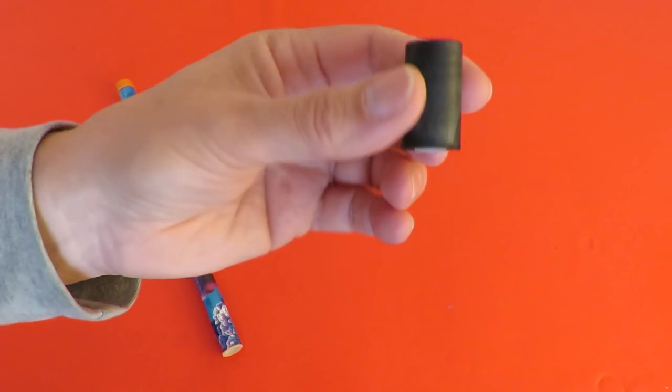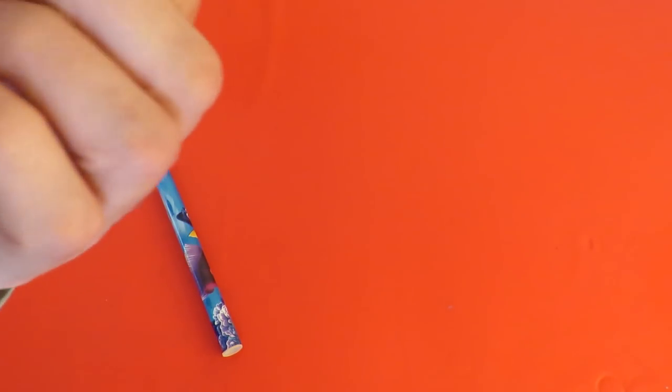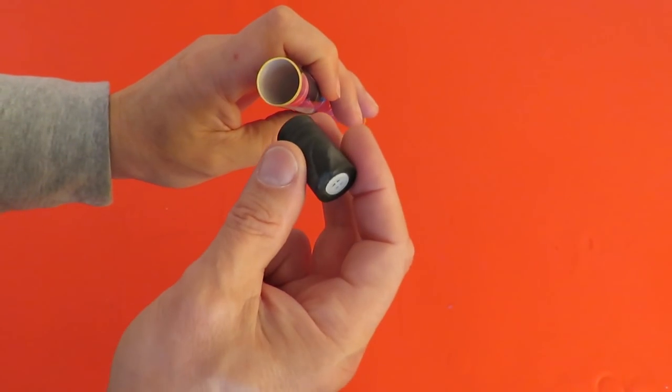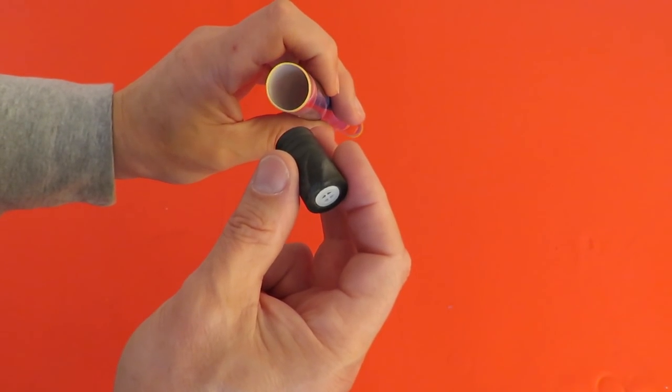So depending on which way round I blow it depends on which noise it makes. Going up and down the tube is enough to make the air go up and down through it.